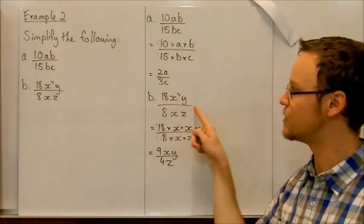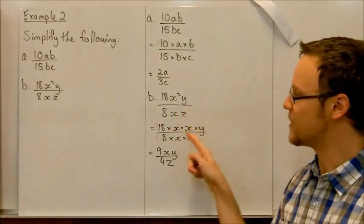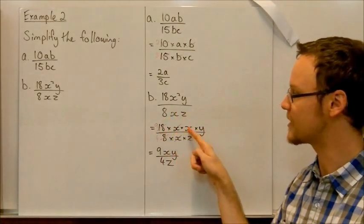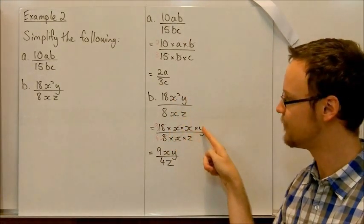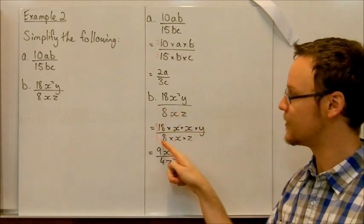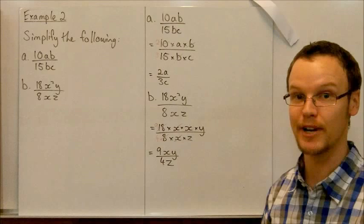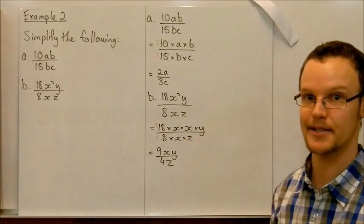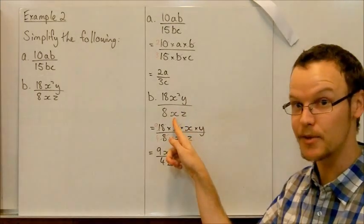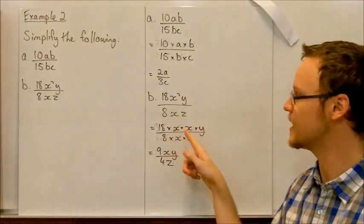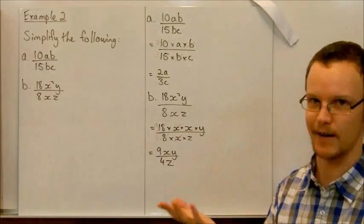18x squared y divided by 8xz. We can expand that out to write 18 times x times x, because x squared equals x times x, times y, all over 8 times x times z. Now, one of the x's will cancel, but see we've only cancelled one of the x's, because there's not 2x squared on the bottom. There's no x squared on the bottom. It's just x on the bottom, so we can only cancel one because x divided by x is 1.